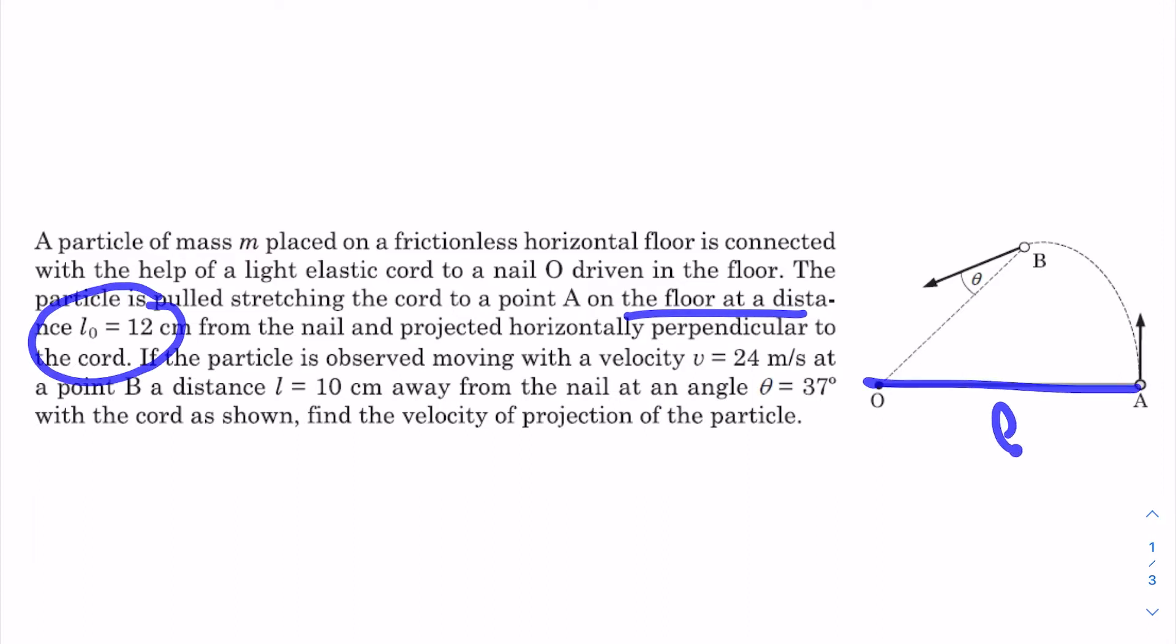This distance is L₀ from the nail and projected horizontally perpendicular to the cord. This is in the horizontal plane and perpendicular to the cord, projected by V₀ velocity.